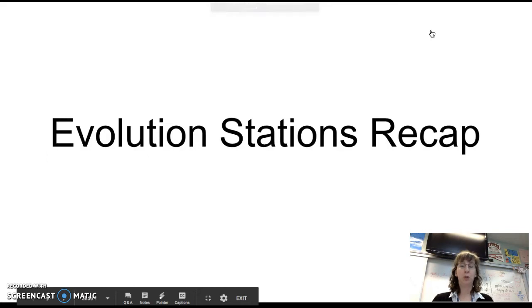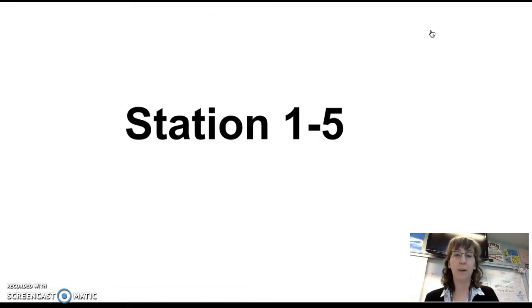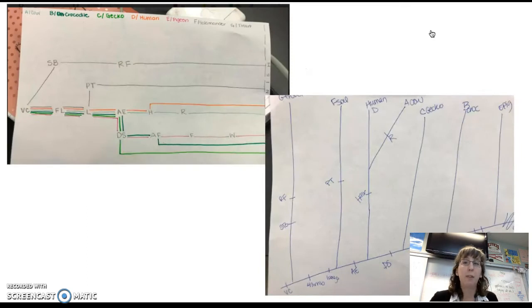Okay, so here is your evolution stations recap. We will be going over stations 1 through 5. My first question to you is how do we model evolutionary relationships? Pause the video, think about it. We model evolutionary relationships by making a cladogram, which as you saw in station one, we were simulating evolutionary relationships by having a race through the woods.